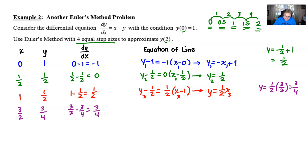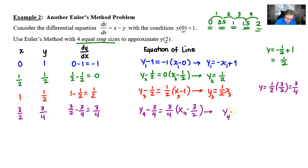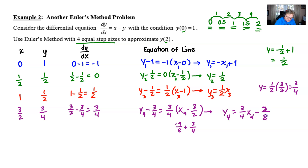I can now write the equation for the fourth line using subscript 4: y₄ minus three quarters equals three quarters times (x₄ minus three halves). Getting y₄ by itself, I distribute three quarters and subtract to get y₄ equals three quarters x₄ minus nine eighths plus six eighths, which equals three quarters x₄ minus three eighths.